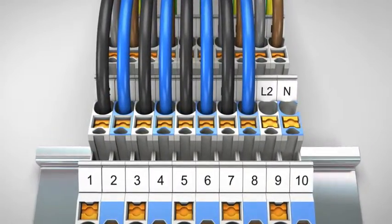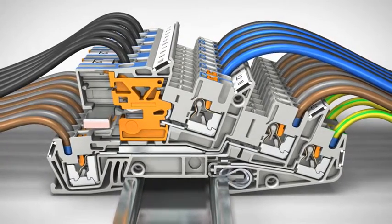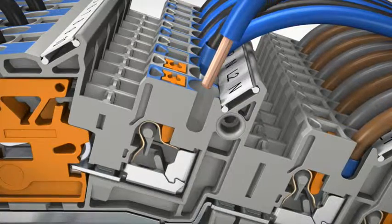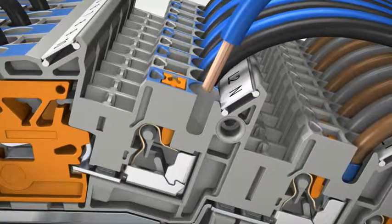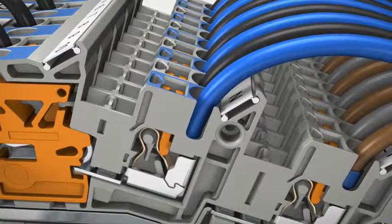Experience the easiness of insertion with the new push-in installation terminal block from Phoenix Contact. You can insert solid and stranded conductors with a cross-section from 0.34mm² easily using 50% less force and without using any tools.